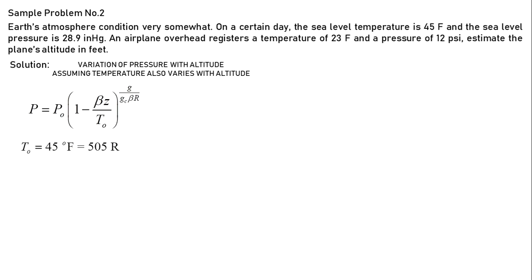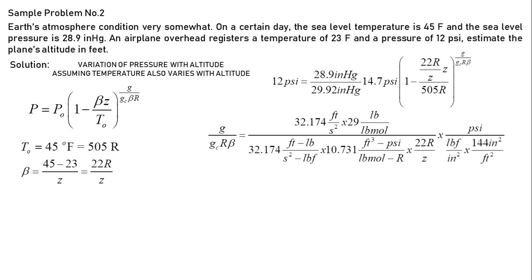Initial temperature equals to 45 degrees Fahrenheit equals to 505 Rankine and beta equals change in temperature over height, 45 minus 23 over z equals to 22 Rankine over z. Let's substitute all the variables into the equation for g over gc times R times beta. Let's take a closer look because I want to show you the cancellation of units.